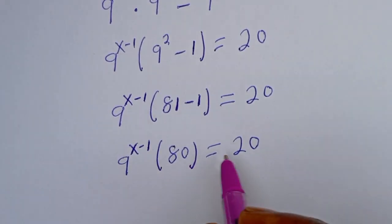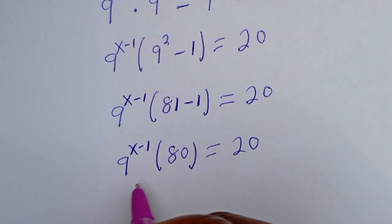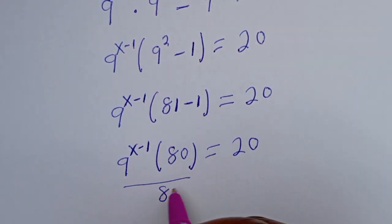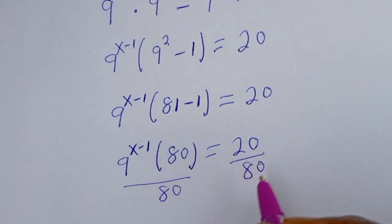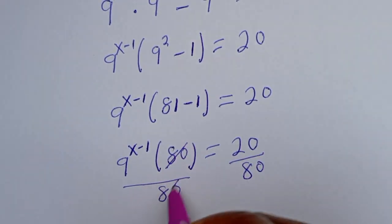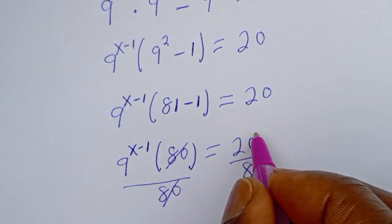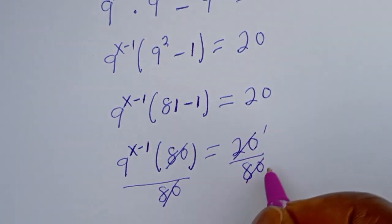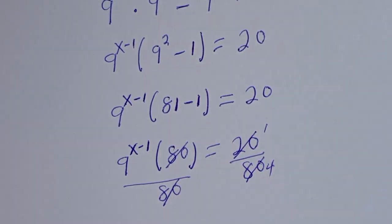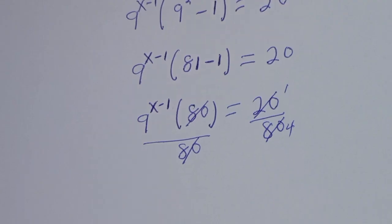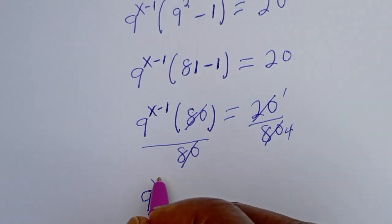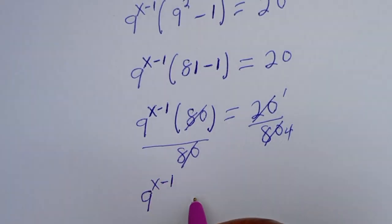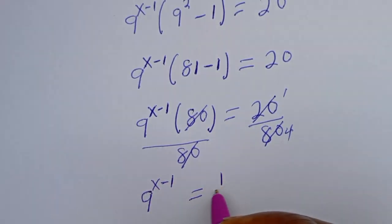Then let's divide both sides by 80. This will cancel this. 20 divided by 80 gives us 1 over 4. And we have 9 to the power of x minus 1 is equal to 1 over 4.